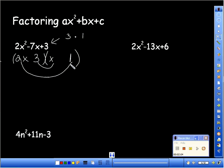So 2x times 1 gives me 2x, and 3 times x gives me 3x. Will 3x and 2x ever add to get negative 7? No. No. So it doesn't work. So that didn't work.